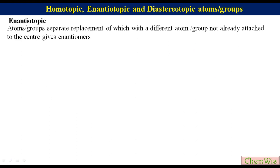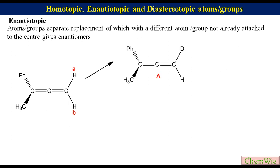Now we are going to take the example of allene. For an allene to be optically active, the two substituents on each terminal carbon should be different. So the given allene with two hydrogens on the terminal carbon is optically inactive. Label the two hydrogens as A and B. Replace HA with deuterium to get structure A and replace HB with deuterium to get structure B. Structures A and B are enantiomers. So HA and HB are enantiotopic.